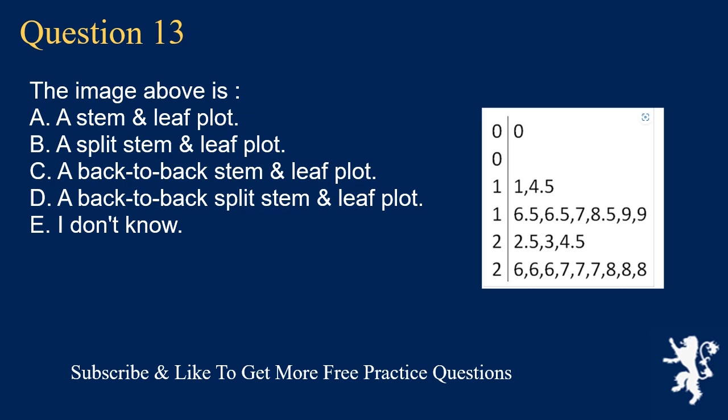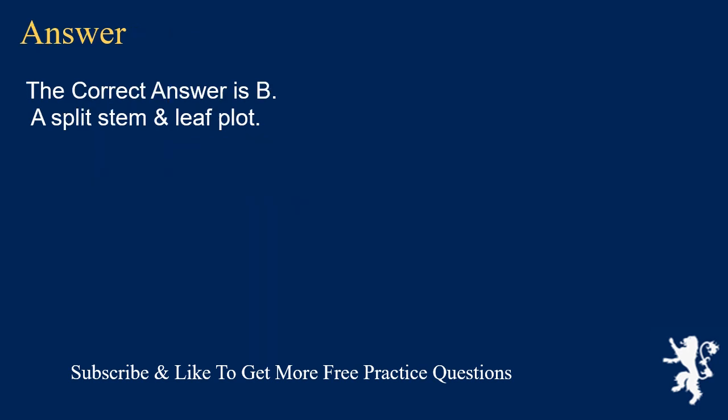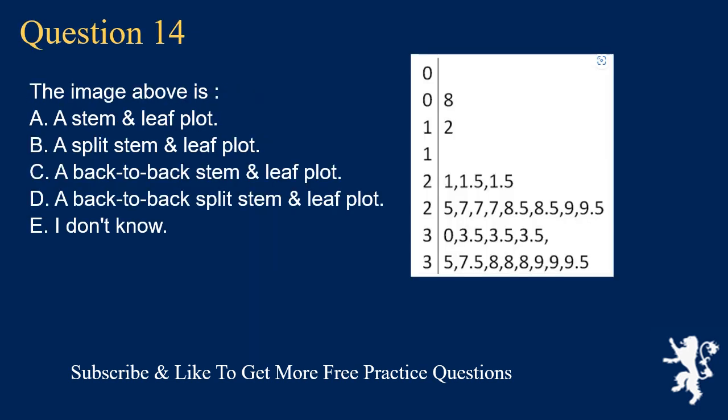Question 13: The image above is A. a stem and leaf plot, B. a split stem and leaf plot, C. a back-to-back stem and leaf plot, D. a back-to-back split stem and leaf plot, E. I don't know. The correct answer is B, a split stem and leaf plot.